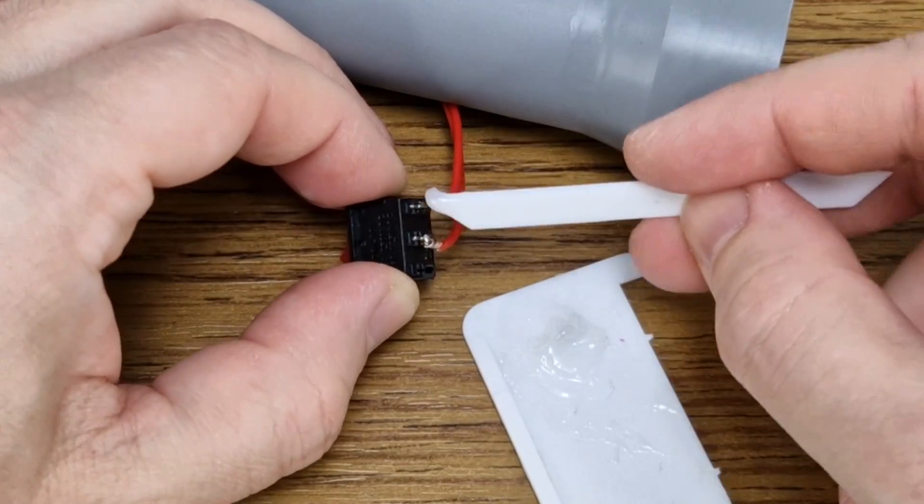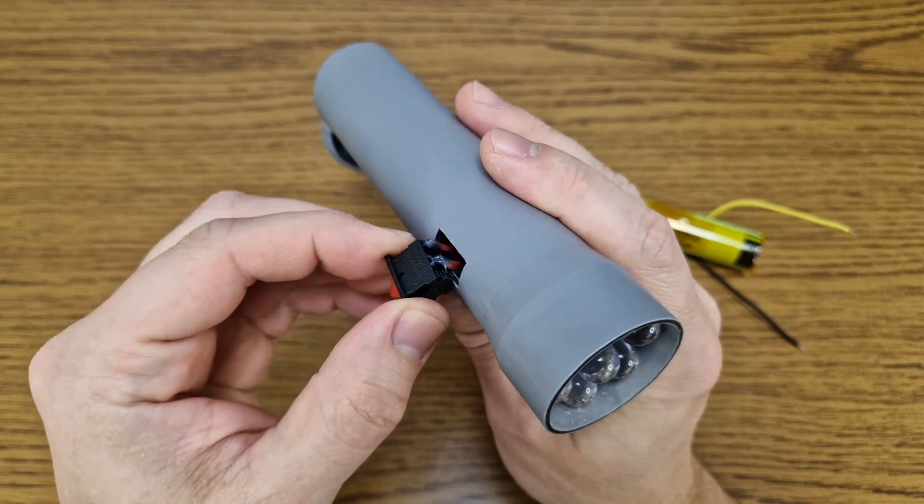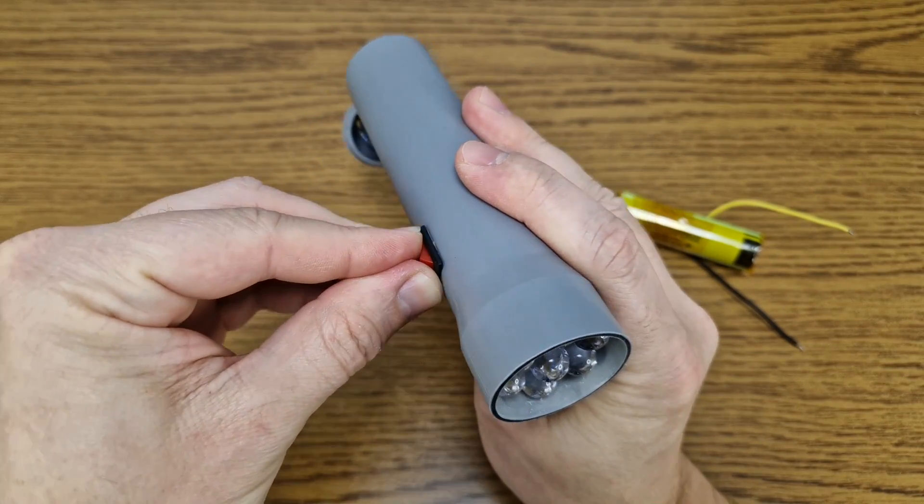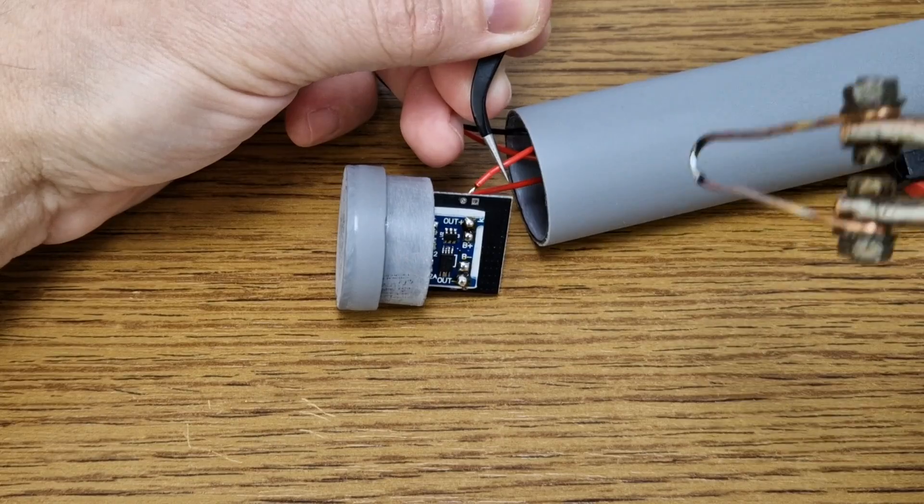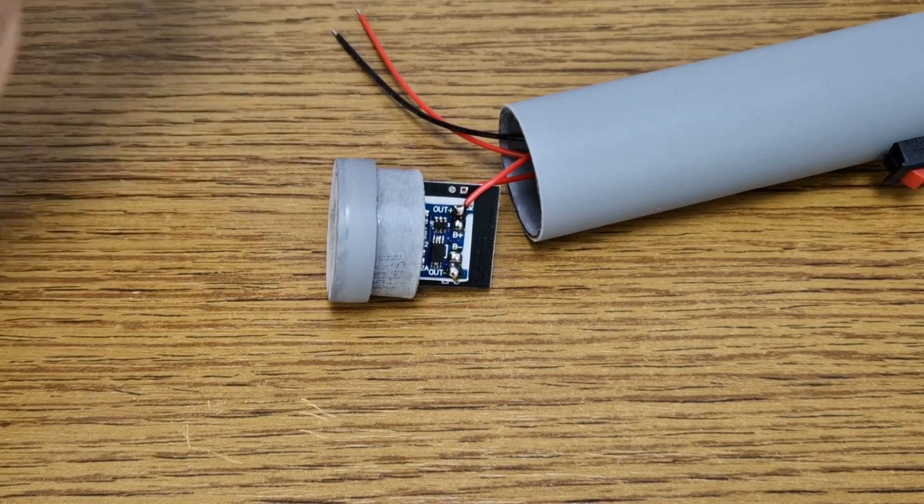And I will also insulate the soldering joints with adhesive to eliminate the possibility of a short circuit. The switch will be connected between the output of the charging module, because it also has battery protections, and the input of the converter.